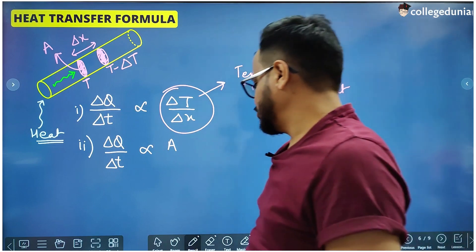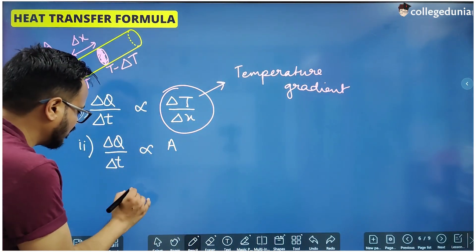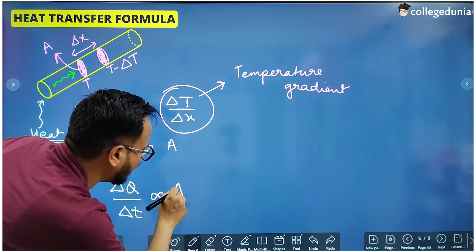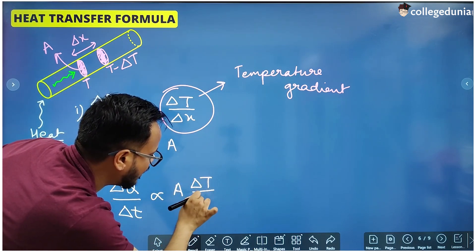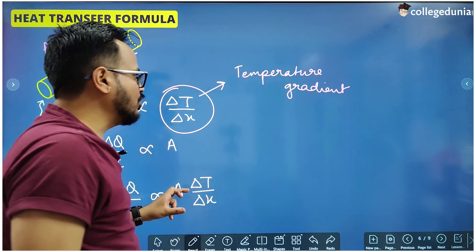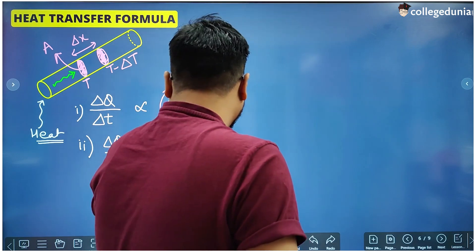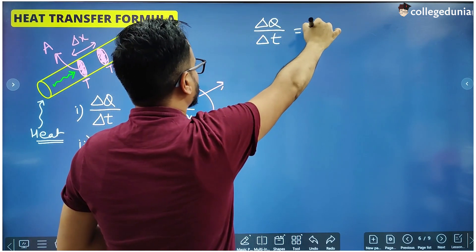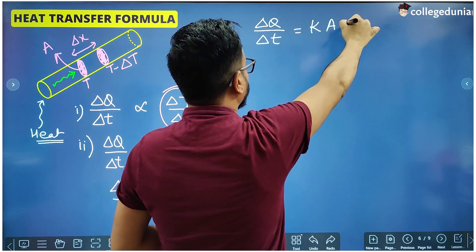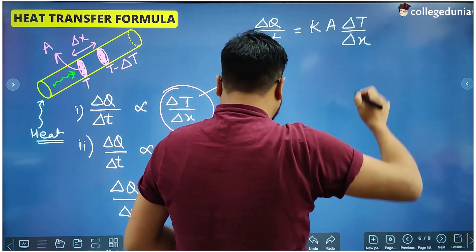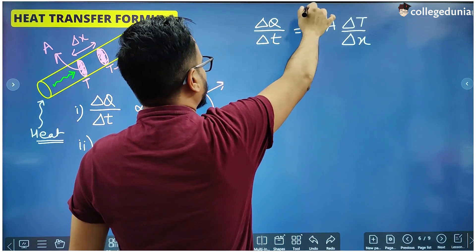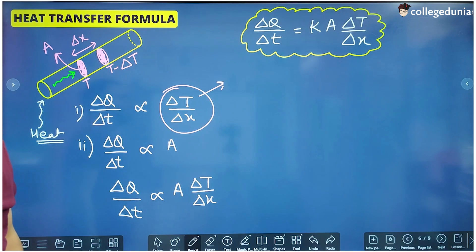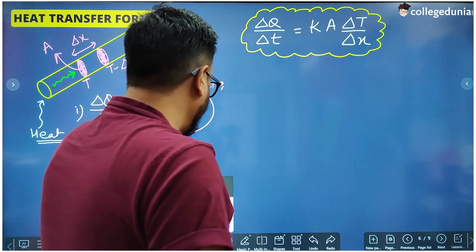Combining these two factors, we get: delta Q by delta t is directly proportional to A into delta T by delta x. Putting in a proportionality constant, we replace the proportionality sign with an equality sign, and the formula becomes K A delta T by delta x. This is called the heat transfer formula, as it gives the rate of flow of heat through a conductor per unit time.